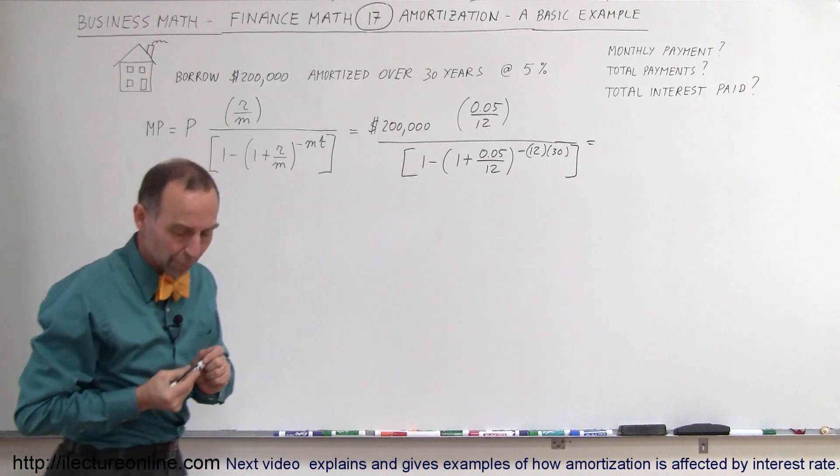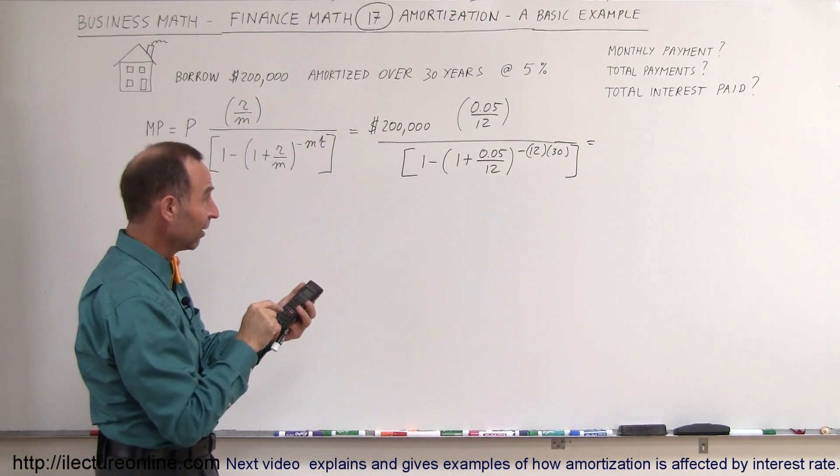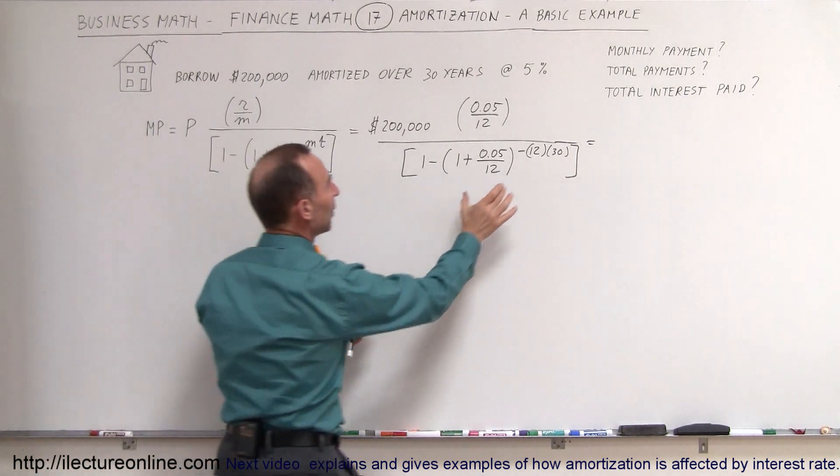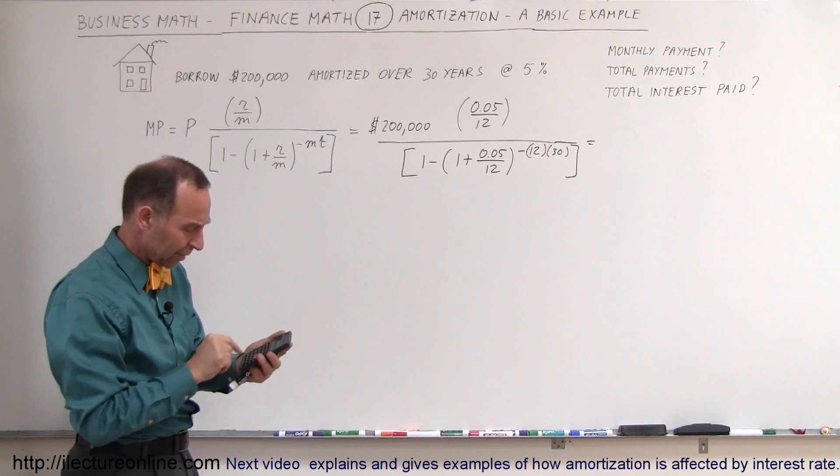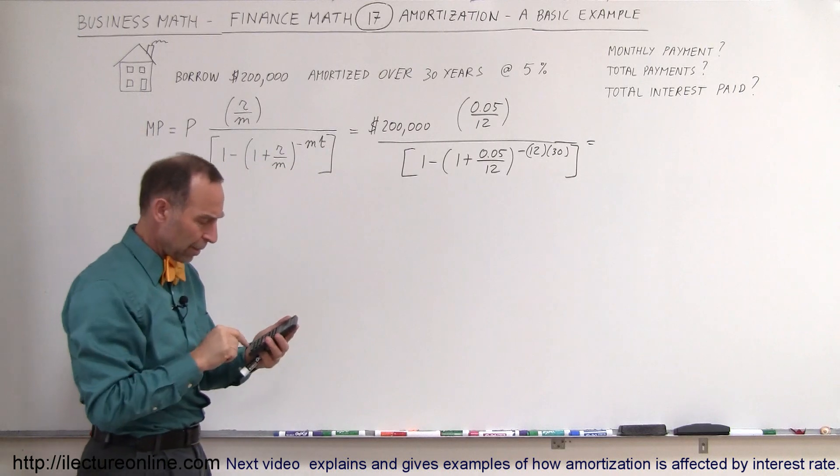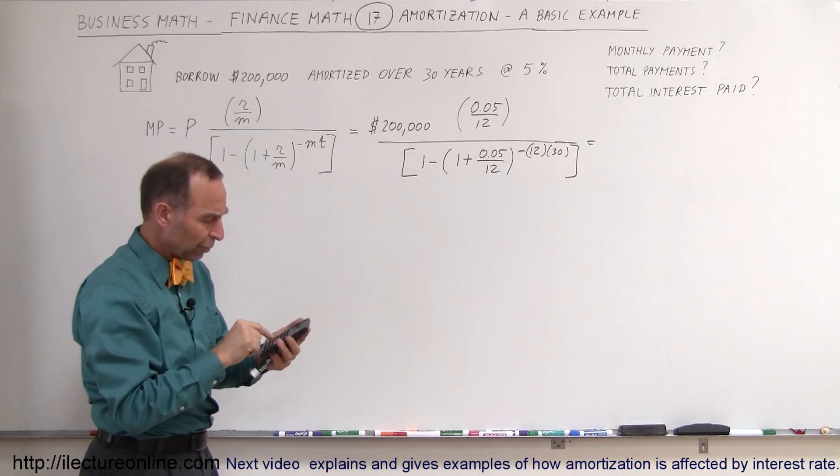So let's see what that monthly payment would be for such a loan. 0.05, divided by 12, plus 1 equals. That's better. We raise that to the minus 360th power. So 360 minus equals. We subtract this quantity from 1. So subtract from 1.